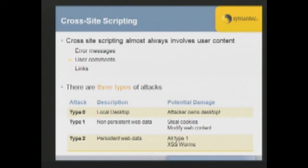Type 0 is interesting and often overlooked - it's an attack against the local desktop. A lot of applications used today are based on HTML. For example, IM clients render smiley faces using Internet Explorer. Interfaces such as InstallShield, VMware, Norton Internet Security - they all use HTML for their interface. Winamp is another application that uses HTML. If you can get a cross-site scripting attack going in one of those applications, you're pretty much on the desktop, which is a really powerful way of leveraging cross-site scripting. Help systems in Windows - the CHM files - are all based in HTML.